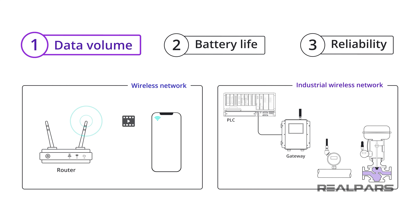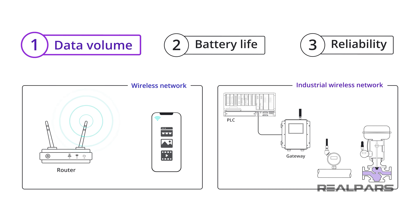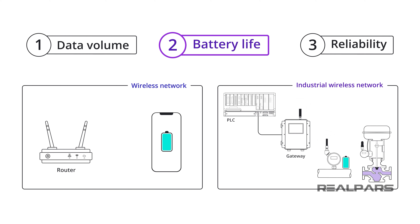In a typical wireless network, we usually send and receive large amounts of data such as video files, images, and web pages. However, in an industrial wireless network such as IIoT, we usually send and receive small amounts of data like gas pressure or liquid level in an industrial process. Devices in a typical wireless network such as smartphones are designed to process large amounts of data, so their battery life is relatively short. In comparison, devices in an industrial wireless network are designed to process small amounts of data, and their battery life can go as long as a few years without requiring a single charge.